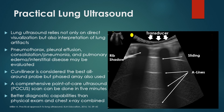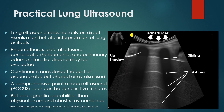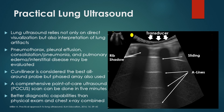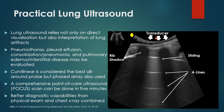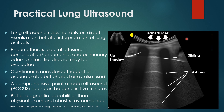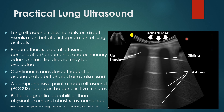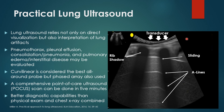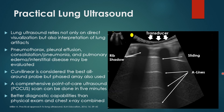Lung ultrasound relies not only on direct visualization but also on the interpretation of lung artifacts. Air does not reflect very well, but you get interesting artifacts that tell you a lot about what's going on. Typically, normal findings include A-lines and sliding along the visceral and parietal pleura. Physical findings include pleural effusion as a very anechoic region in the chest, consolidation as the alveoli become filled with fluid or blood giving it an organ-type appearance, and pulmonary edema and interstitial disease evaluated through B-lines.